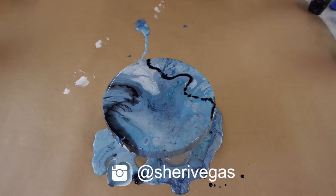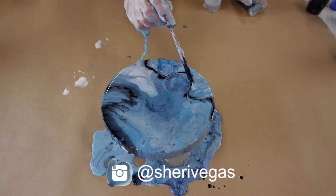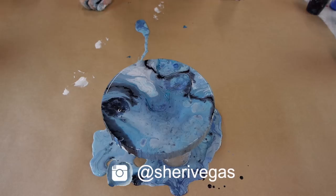Now I'm just dropping some of my rubbing alcohol onto the artwork. What this does is the alcohol actually repels the paint and brings up the bottom layer of the paint to the surface.